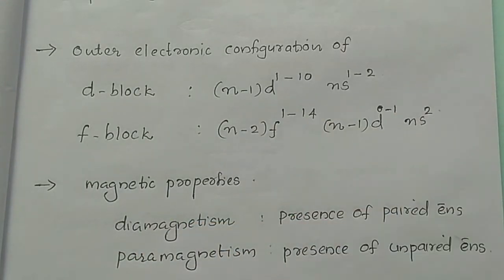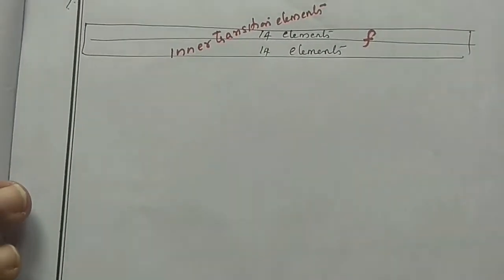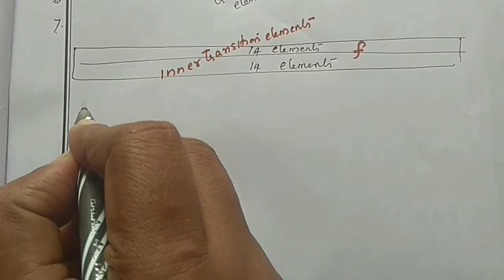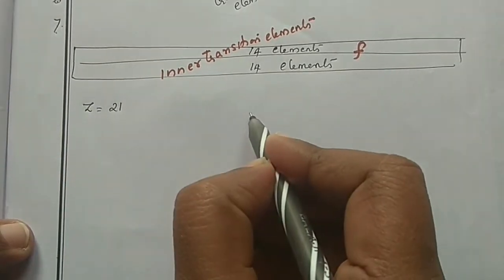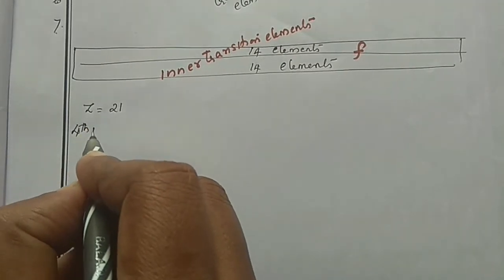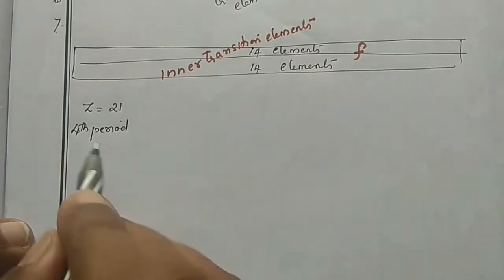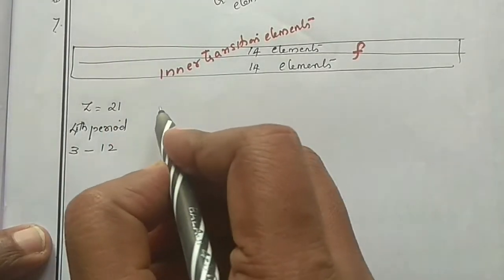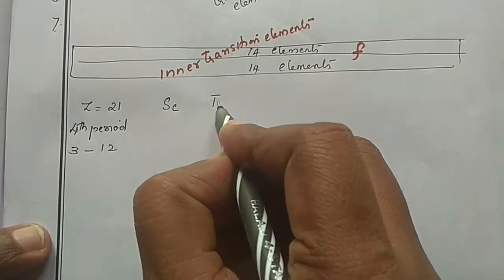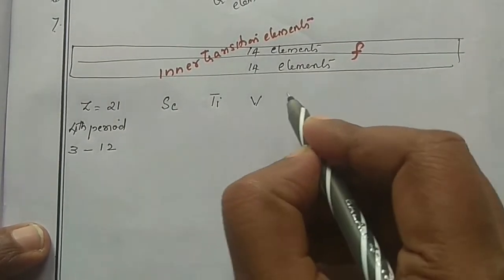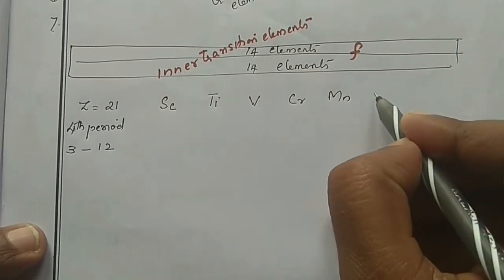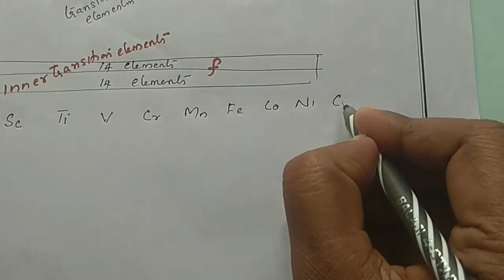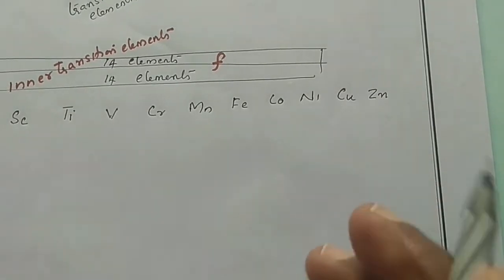This is an example of D block elements. Atomic number 21 onwards are 4th period elements in groups 3 to 12. These are: Scandium, Titanium, Vanadium, Chromium, Manganese, Iron, Cobalt, Nickel, Copper, Zinc — 10 elements total. This first row is called the 3D elements.